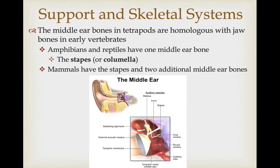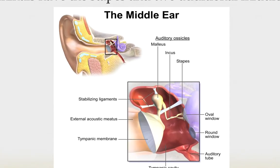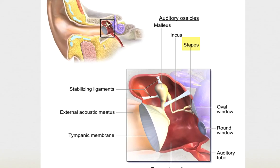The middle ear bones in tetrapods are homologous with the jaw bones of early vertebrates. Amphibians and reptiles have one middle ear bone — the stapes or columella — and this includes birds as well. Mammals, however, have the stapes and two additional middle ear bones: the malleus and incus.